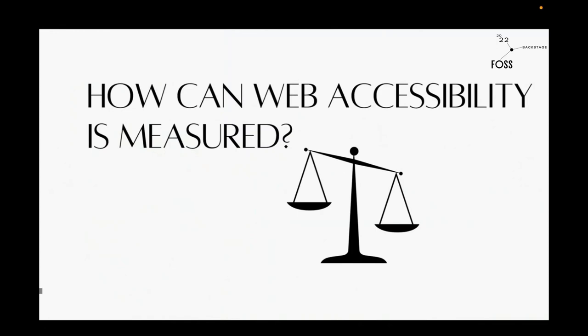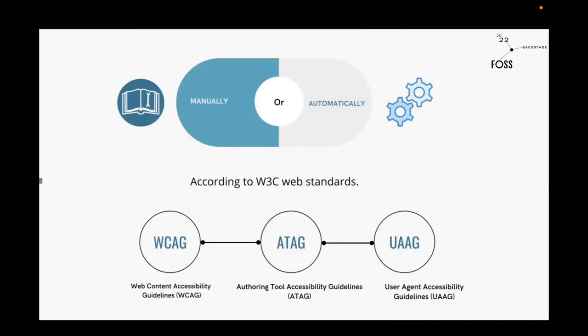So how can web accessibility be measured? There are different ways you can test the accessibility of your website or software — manually or automatically. There are several open source tools you can implement and run automatically without writing too much code to test your website's accessibility. You can also do this manually by developing code to check during the testing phase. You can follow the standards set by the W3C processes and the Web Accessibility Initiative. These two bodies formed the standards: the Web Content Accessibility Guidelines, the Authoring Tool Accessibility Guidelines, and the User Agent Accessibility Guidelines.